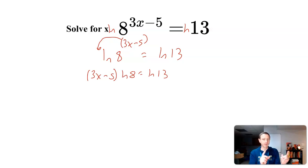I have to multiply the natural log by the entire statement of 3x minus 5. If I don't put those parentheses, I might forget to do that. So I'm going to do ln(8) times 3x and ln(8) times negative 5. I'm going to have 3x·ln(8) - 5·ln(8) = ln(13).